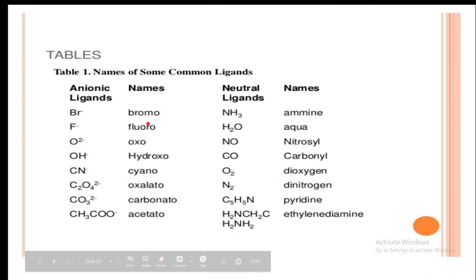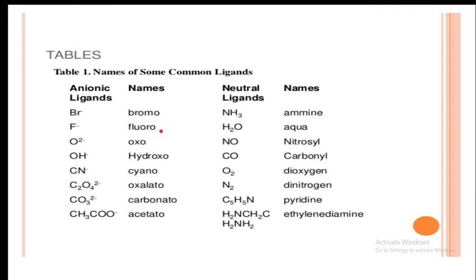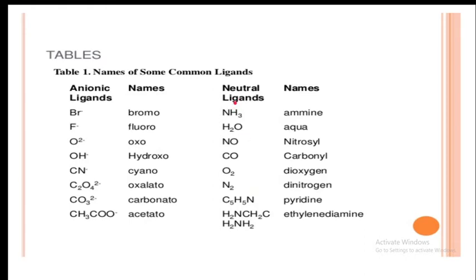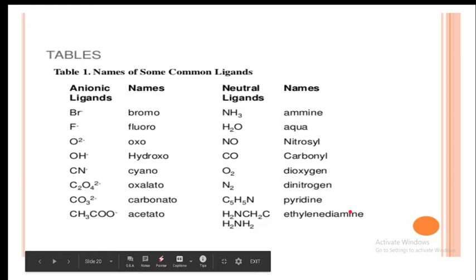Common anionic ligands include: Br⁻ bromo, F⁻ fluoro, O²⁻ oxo, OH⁻ hydroxo, CN⁻ cyano, C2O4²⁻ oxalato, CO3²⁻ carbonato, COO⁻ acetato. Neutral ligands include: NH3 amine, H2O aqua, NO nitrosyl, CO carbonyl, O2 dioxygen, N2 dinitrogen, C5H5N pyridine, and NH2CH2CH2NH2 ethylenediamine.